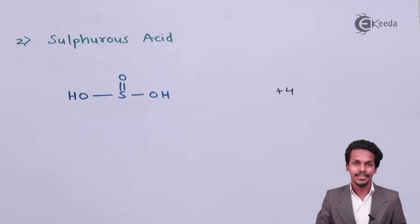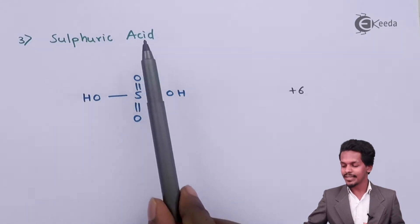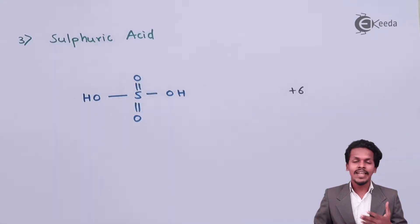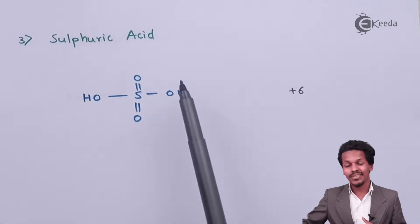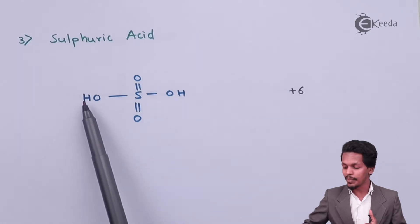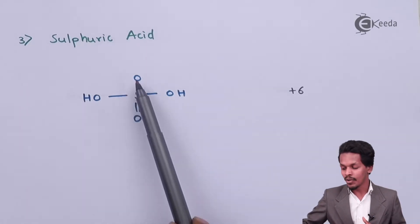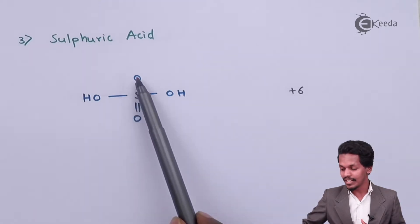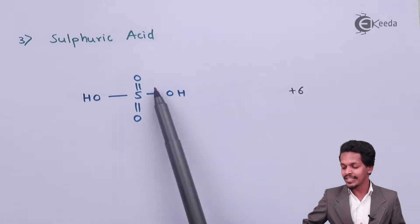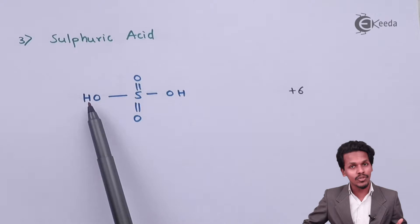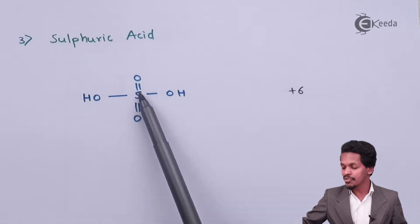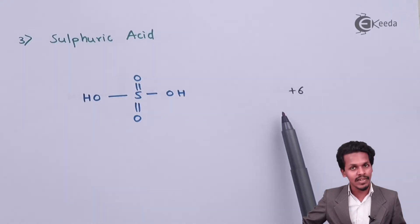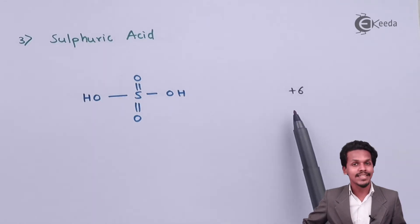The next is sulfuric acid, with the chemical formula H₂SO₄. In its structural formula, sulfur is attached to two oxygen atoms via double bonds, and the remaining two valencies are satisfied by OH groups. The oxidation state of sulfur, the central atom, is +6.